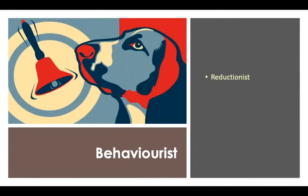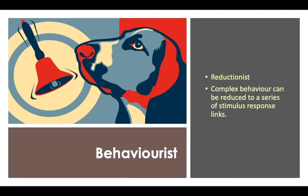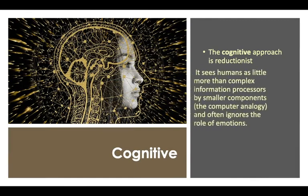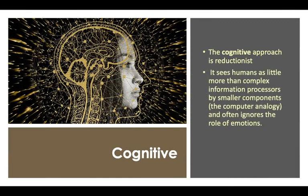The behaviorist approach is reductionist, because it reduces complex behavior to a series of stimulus-response links. The cognitive approach is also quite reductionist, in the sense that it sees humans as complex information processors. Think of the computer analogy — it ignores the role of emotions in a way, because it's all about what is going on in the mind, how information is being processed. It uses the principle of machine reductionism to understand this, focusing on just how information is being processed rather than going broad.